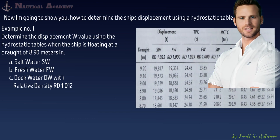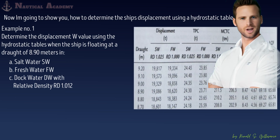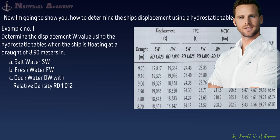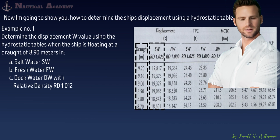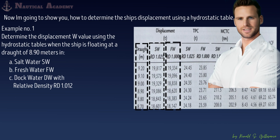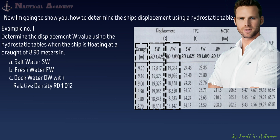This is a piece of hydrostatic table extracted from the ship's stability information manual, which we will use in this problem. The first column from the left is the ship's draft in meters. The second column is the value of ship's displacement in salt water. The third column is the value of ship's displacement in freshwater. The unit used for ship's displacement is tons or metric tons.